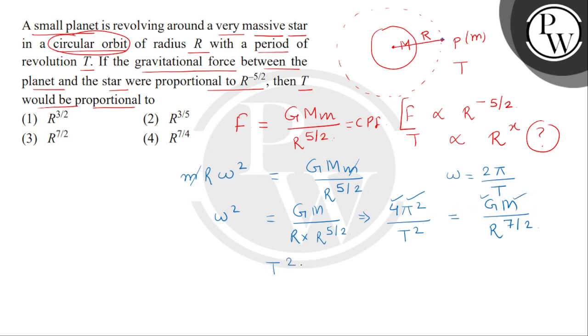तो हम लिख सकते हैं, T square is directly proportional to r to the power 7 by 2. But हमें dependence निकालनी है, time period की radius की power पर. दोनों side का square root ले लेंगे. So we get T directly proportional to r to the power 7 by 4. हमें यहां पर x की value क्या मिल जाती है, means power of r, 7 by 4.